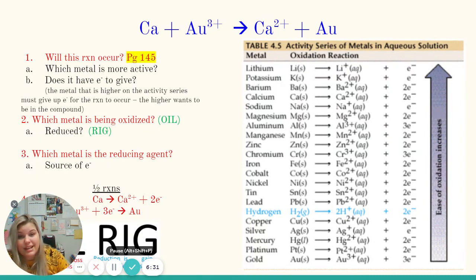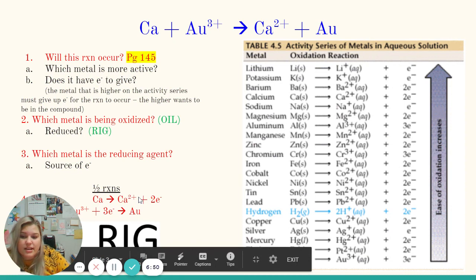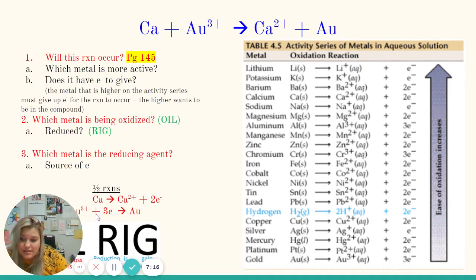We also have the terms reducing agent and oxidizing agent, which we typically label on the product side of the forward reaction. In this case, calcium was being oxidized to become Ca²⁺; going backwards, Ca²⁺ is the reducing agent. Gold with an oxidation state of zero going backwards is the oxidizing agent.